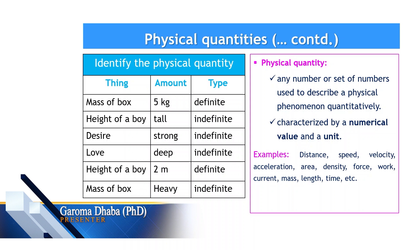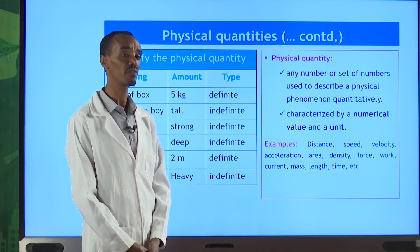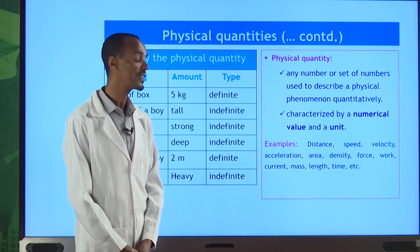Now, what is a physical quantity? A physical quantity is a number or a set of numbers which is used to describe a certain physical phenomenon. It represents the magnitude and we need units to express it. Physical quantities are characterized by a numerical value — the number or set of numbers — and they must also have a unit.